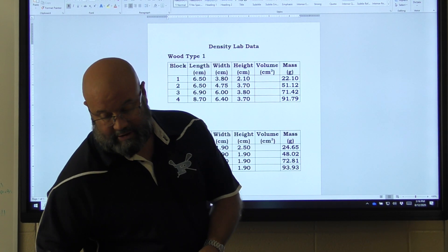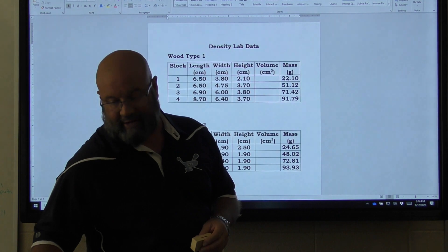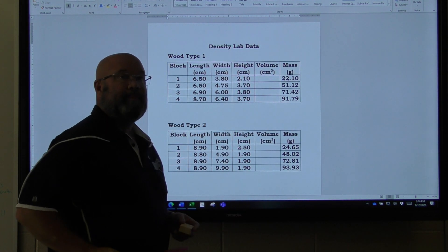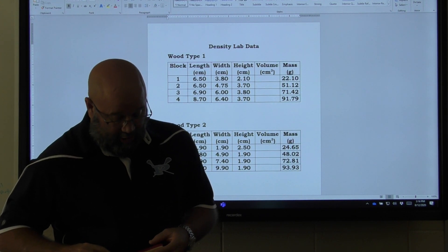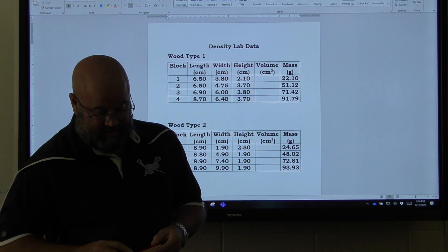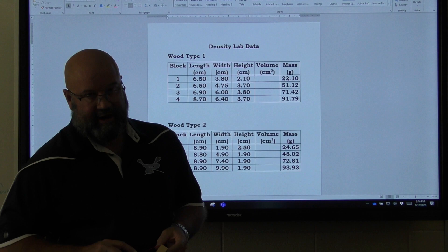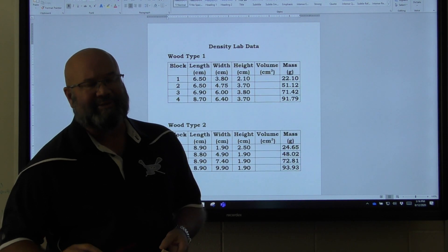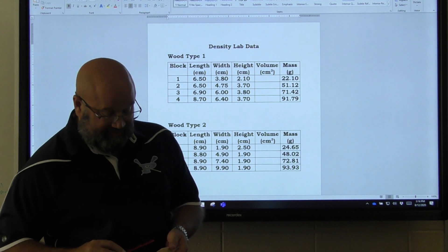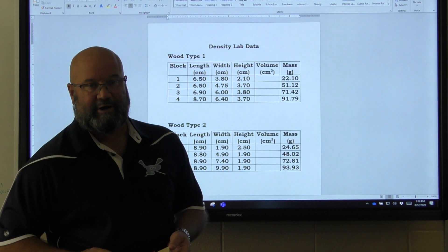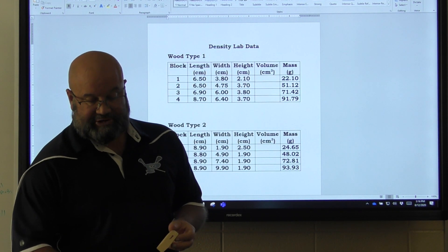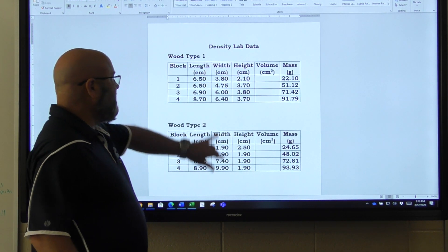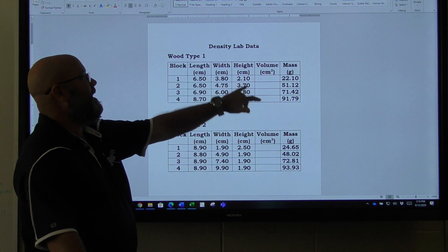The first thing I'm going to measure to find volume is length, width, and height. Generally length is usually the longest measurement, then width would be the next and height would be the third. Really doesn't matter which one's which, you just have to measure all three sides. So I've taken this first type of wood, wood type number one, measured that block and found the length to be 6.5, width 3.8, height 2.1.